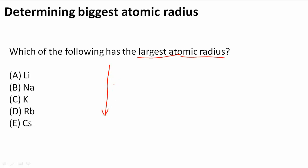So what happens to the atomic radius as we go down the group? It increases. As we go down, the atomic radius gets bigger.